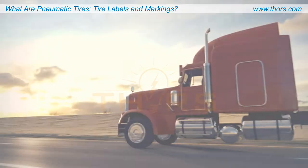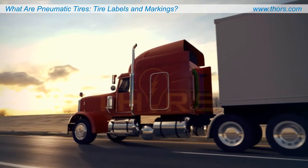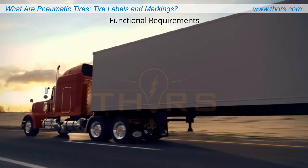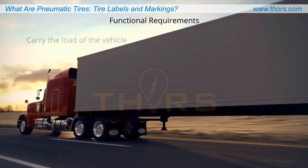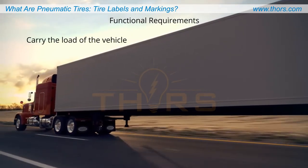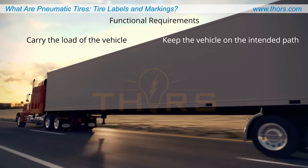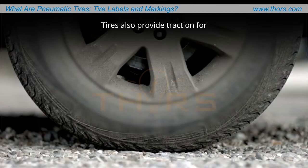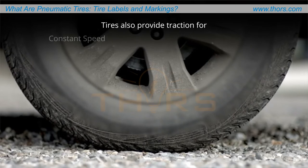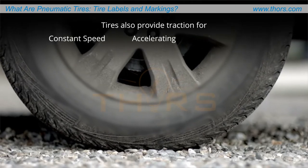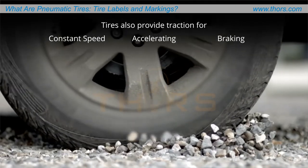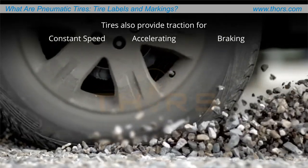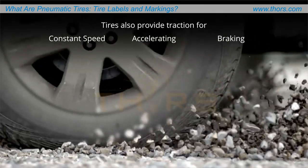When in operation, tires have several functional requirements. A tire's primary function is to carry the load of the vehicle and keep the vehicle on the intended path. Tires also provide traction for constant speed, accelerating, and braking, in different weather conditions, as well as different ground surfaces and terrain.